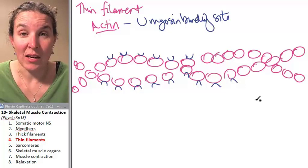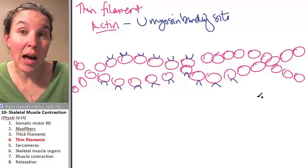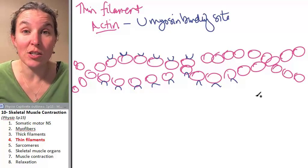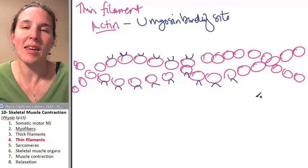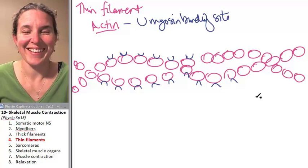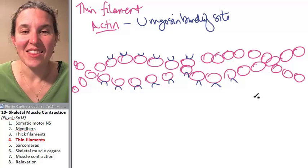And it's true. Actin and myosin, when the moon and the stars align and you send the message jump, they can attach to each other. There's something else.